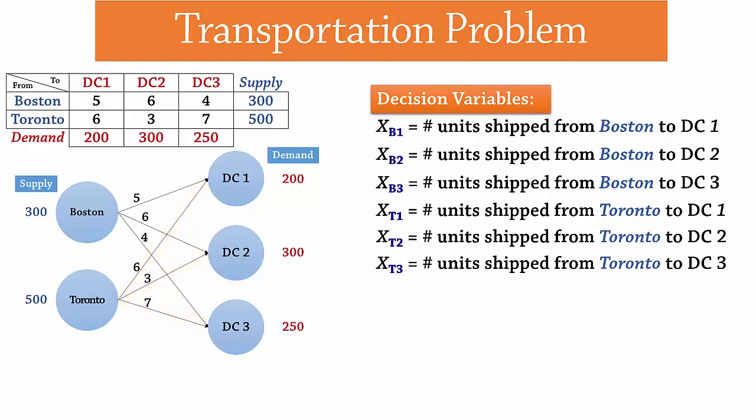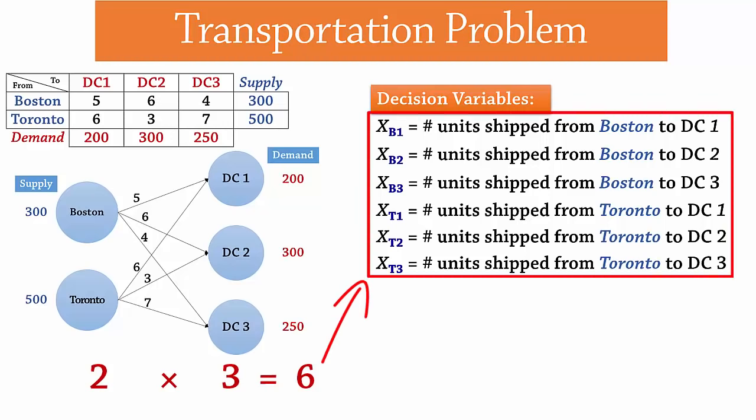The number of decision variables is simply the number of origins multiplied by the number of destinations. In this case, 2 times 3 which equals 6 decision variables.